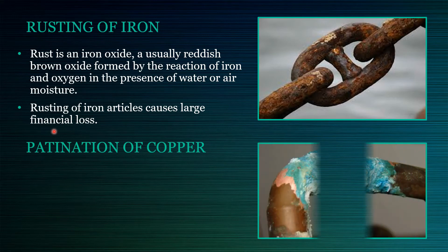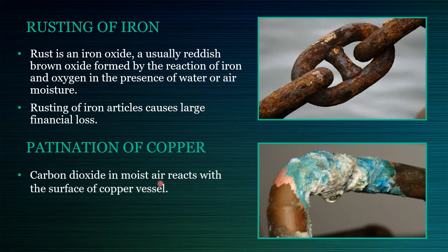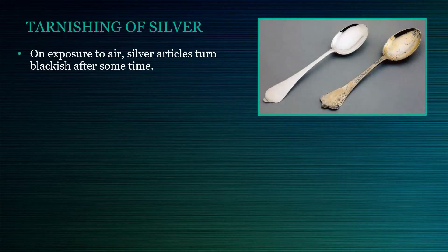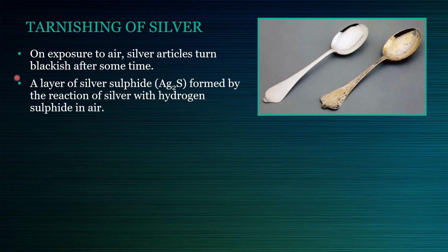About patination of copper: carbon dioxide in moist air reacts with the surface of a copper vessel. Copper loses its lustre due to the formation of a greenish layer of copper carbonate on its surface. About tarnishing of silver: when silver is exposed to sulphur-containing gases in the air, it discolors and then darkens as it reacts with the gas to form a surface layer of tarnish. A layer of silver sulphide is formed by the reaction of silver with hydrogen sulphide in air, leading to the darkening of silver articles.